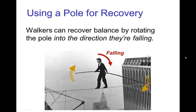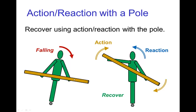But that's not the only use of the long pole. The long pole, especially when it's weighted on the ends, is useful for recovering balance because using action-reaction, the walker can recover balance by rotating the pole into the fall. If the walker is out of balance and falling, they need something to push off against to shift their pose. They do that by pushing the pole into the fall — that's the action — and then there's a resulting reaction which rotates their body in the opposite direction.